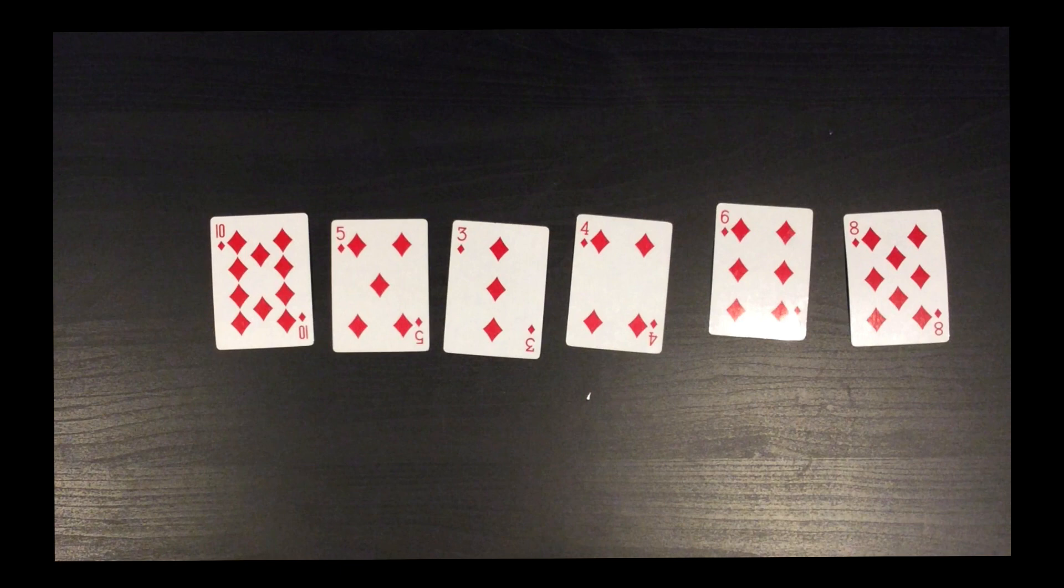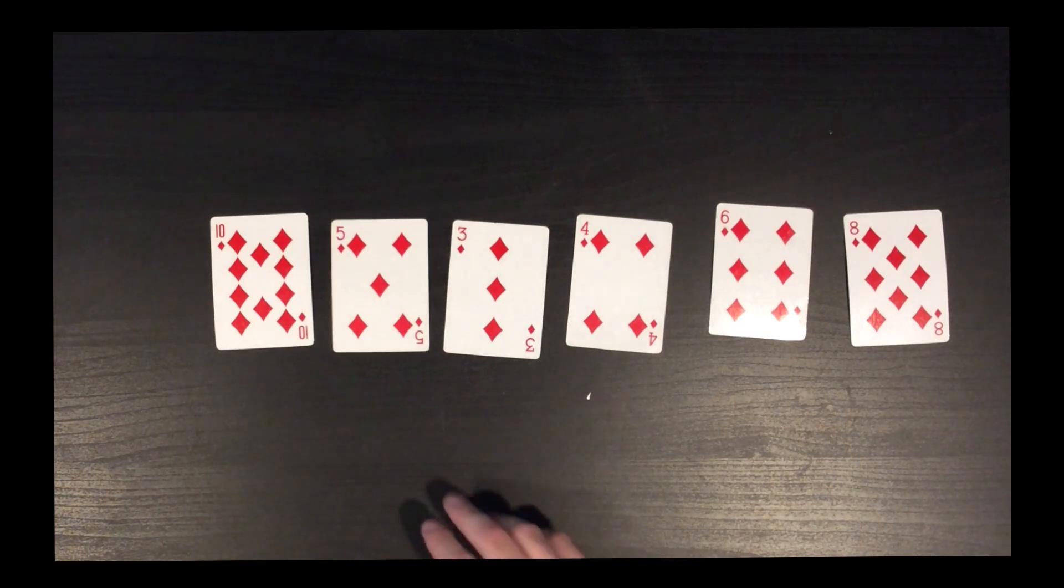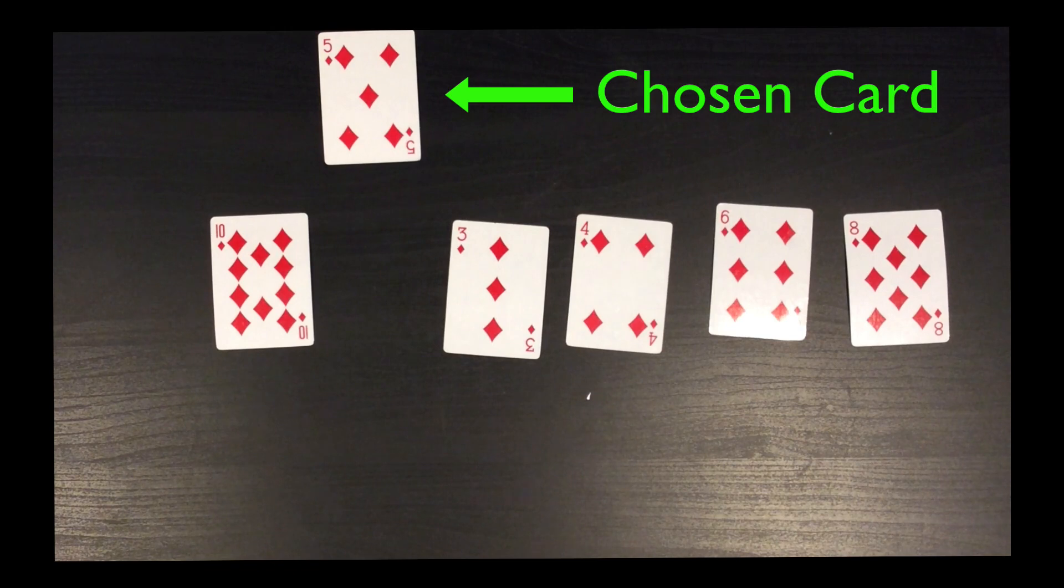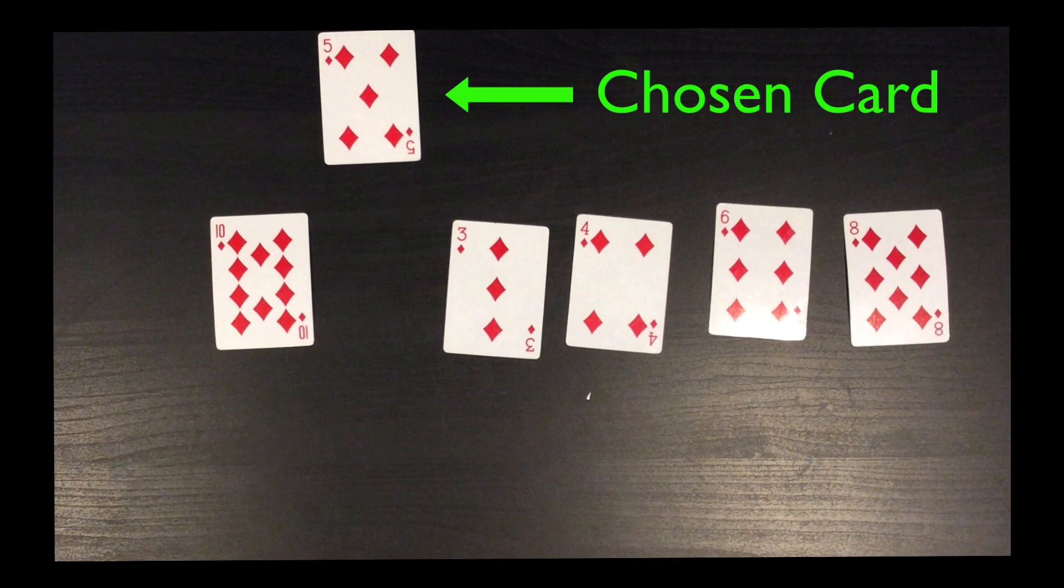The first instruction in insertion sort is for the computer to select the second card from the left, which we'll indicate by sliding it up. We'll call this card the chosen card. We then look at each card to the left of the chosen card one at a time and compare it to the chosen card.